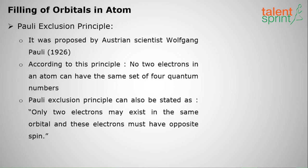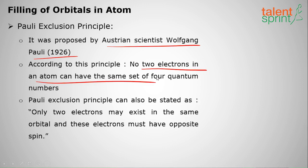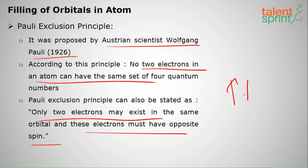The Pauli exclusion principle was proposed by Austrian scientist Wolfgang Pauli in 1926. He states that no two electrons in an atom can have the same set of four quantum numbers. Simply put, no two electrons may exist in the same orbital, and if they do share an orbital, they must have opposite spins — one spinning clockwise, the other anticlockwise.